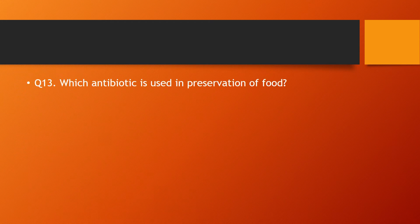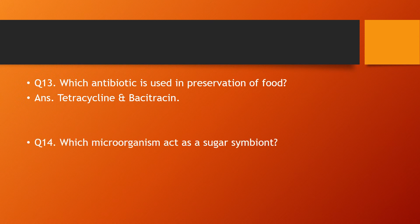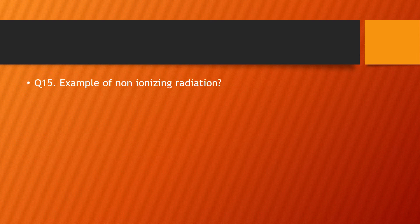Question number thirteen: which antibiotic is used in preservation of food? — the answer is tetracycline and bacitracin. Question number fourteen: which microorganism acts as a sugarcane symbiont? — the answer is Acetobacter diazotrophicus.